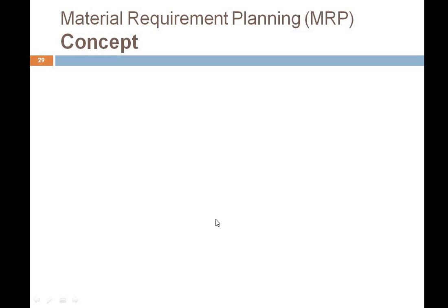Hello everyone, in this video we are going to discuss the topic Material Requirement Planning, also known as MRP. This video will cover the conceptual background of MRP — what we mean by it, its various components, and the process. How and why a production firm plans for material requirements: raw materials, components, sub-components, assemblies, and sub-assemblies required to produce finished goods. We'll determine how much to order and when to order.